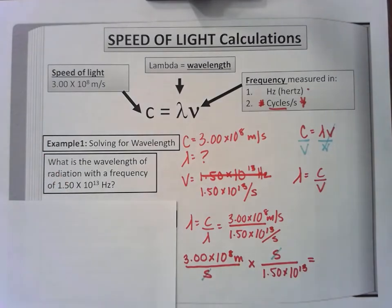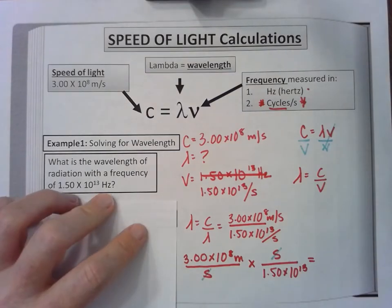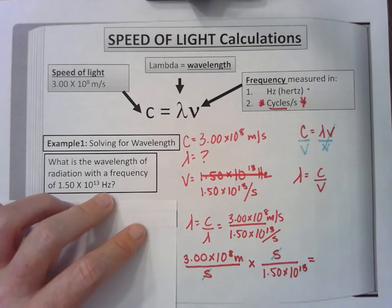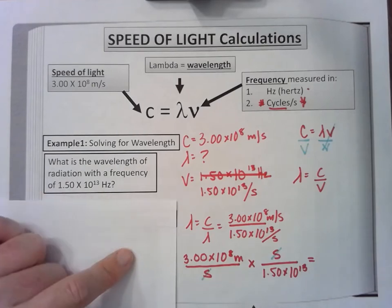Now I have to use my skills on how to enter numbers in scientific notation into the calculator. If you don't remember, go back in your notebook and follow those directions. I'm going to take 3.00 times 10 to the 8 and divide it by 1.50 times 10 to the 13th.